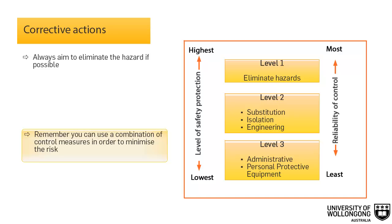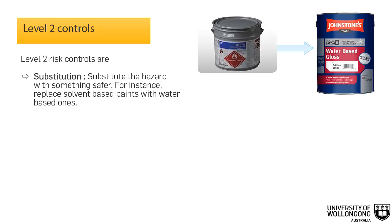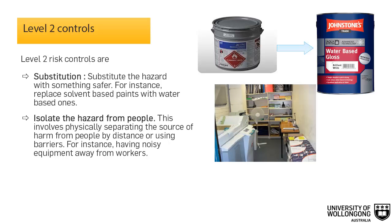You must always aim to eliminate a hazard, which is the most effective control. If this is not reasonably practicable, you need to minimize the risk by working through the other alternatives in the hierarchy. Remember, you can use a combination of control measures in order to minimize the risk. Level 2 risk controls include substituting the hazard with something safer — for instance, replacing solvent-based paints with water-based ones. The next level is to isolate the hazard from people by physically separating the source of harm by distance or using barriers — for instance, having noisy equipment away from workers.